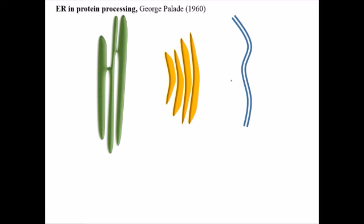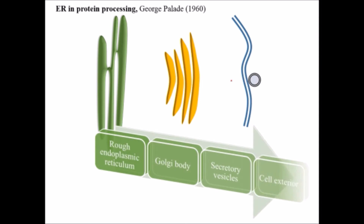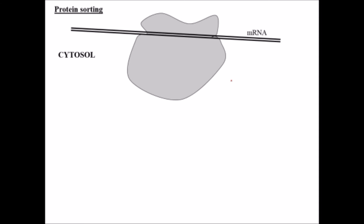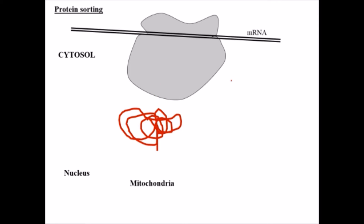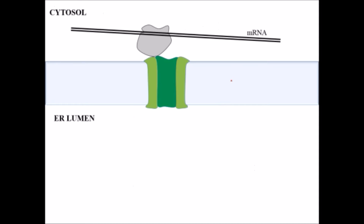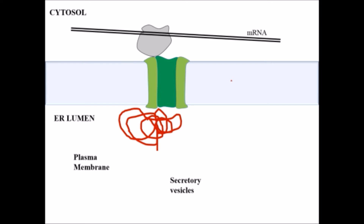The basic function of the endoplasmic reticulum is protein processing. When protein gets synthesized, it is packed in a vesicle and transported to the Golgi body, then in the form of secretory vesicles it is exported out of the cell, or it can fuse with other secretory vesicles. Proteins synthesized in the cytosol are generally translocated to the nucleus, mitochondria, chloroplasts, and peroxisomes, but proteins synthesized on the ER surface are translocated to the plasma membrane, secretory vesicles, and lysosomes.